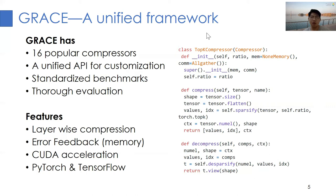There are some features worth mentioning. First, the compression is applied per gradient in the model instead of on the whole model — this is so-called layer-wise compression. Second, GRACE supports the error feedback mechanism, which we call the memory function in our implementation. Third, we have also optimized some of the operators by custom CUDA functions. For example, the TopK CUDA kernel we implemented is 200 times faster than the TopK CUDA function provided by PyTorch.